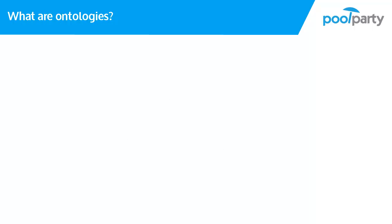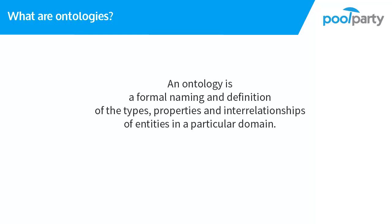First we need to understand what an ontology is. Let's start with the definition of ontology. An ontology is a formal naming and definition of the types, properties and interrelationships of entities in a particular domain. So it is a place where we define how we want something to be.